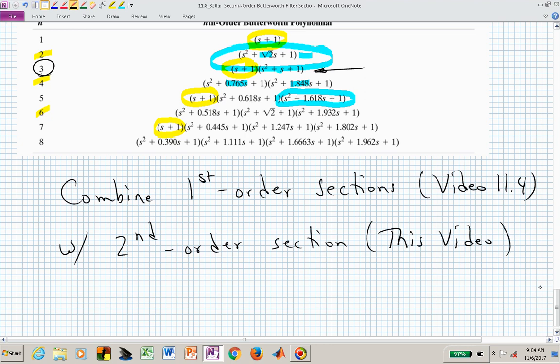All of those combine then to give us the strategy for designing Butterworth filters. We simply figure out what order we need, and that's going to be the next video, and then we have to determine what quadratic factors and the linear factor. We only have the one linear factor depending on if we're dealing with an odd filter order.